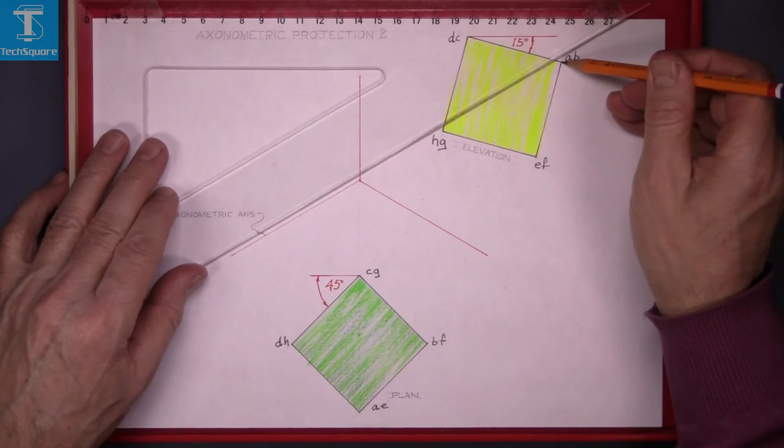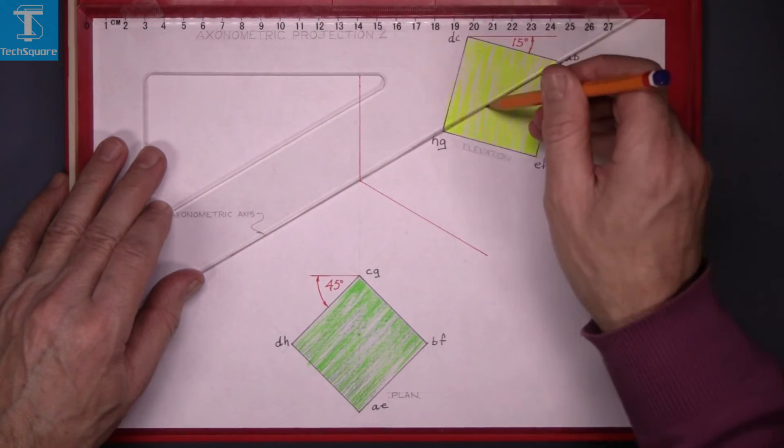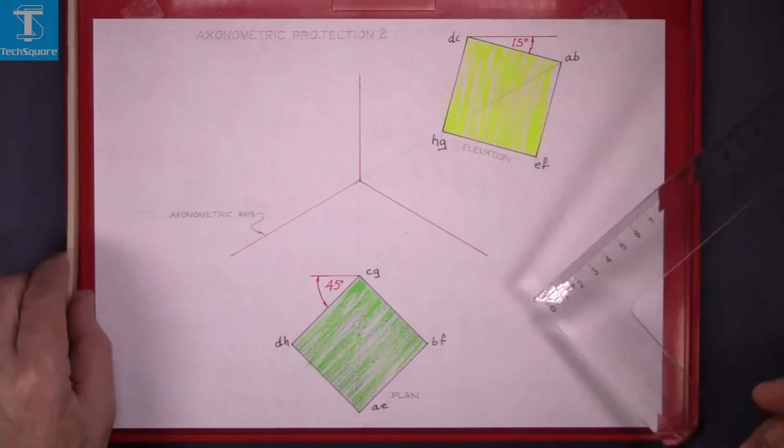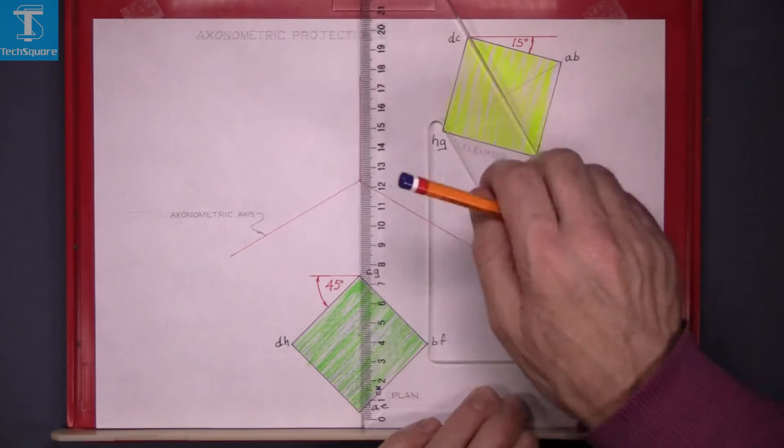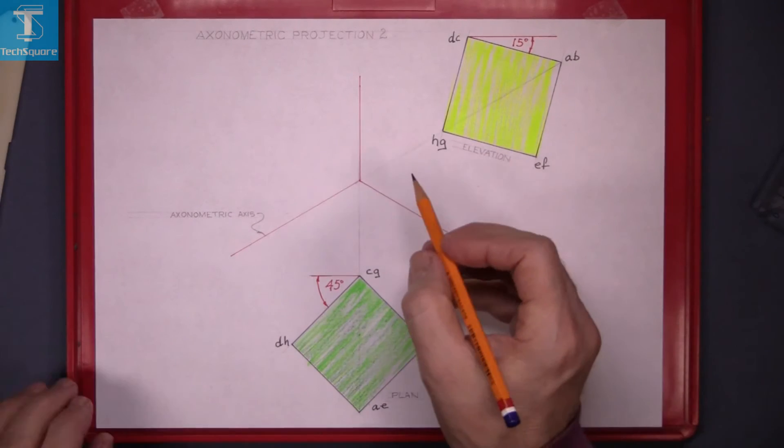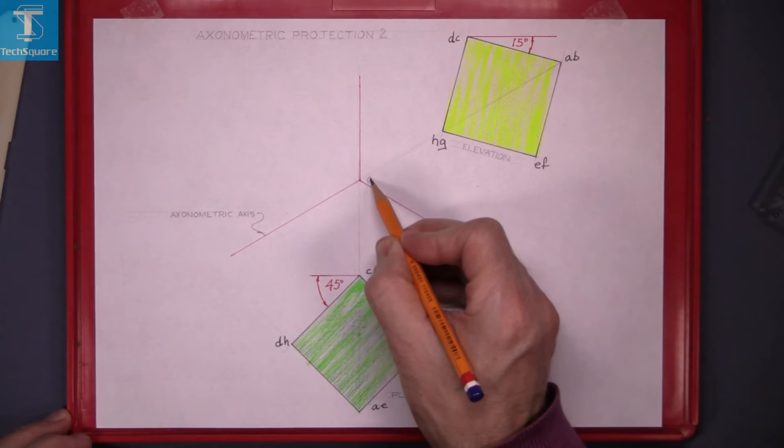So draw point A down at 30 degrees and bring point A up vertically from the plan and where those two lines intersect that's point A.